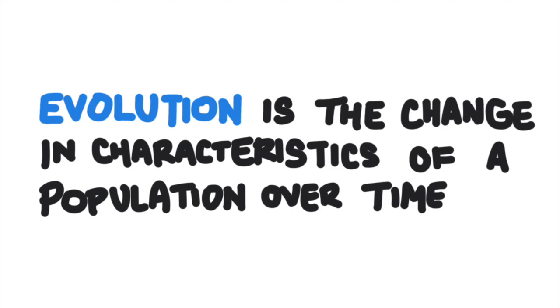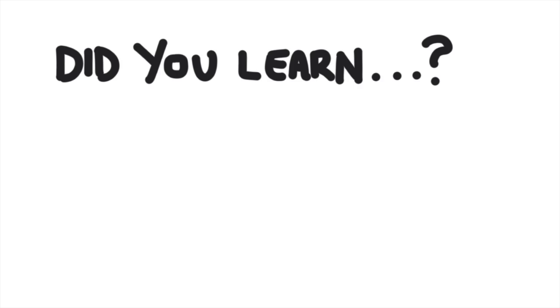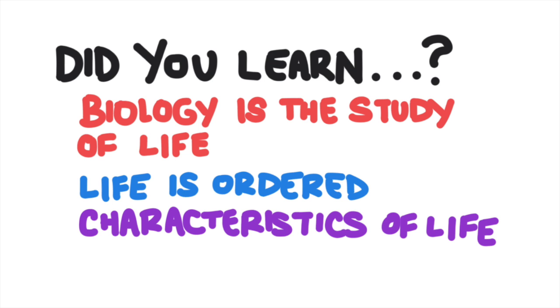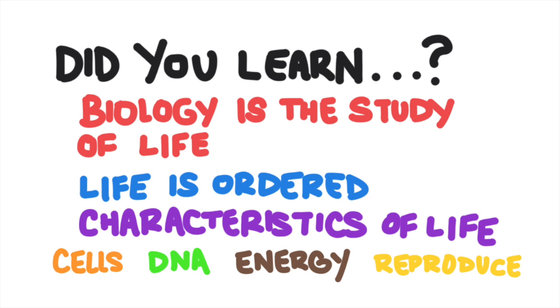Organisms will adapt and change their environment through the process of evolution. It's the change in the characteristics of a population over time. The shape of the beak changes in response to the availability of food. So did you learn everything in this video? Well if you did you learned that biology is the study of life. Life is ordered but in general living things share some basic characteristics. Living things are made of cells. Living things have genetic information called DNA. Living things use and acquire energy. Living things reproduce and grow. And living things adapt to changes in the environment through the process of evolution.